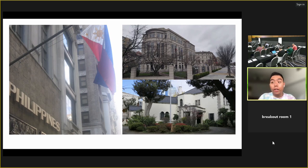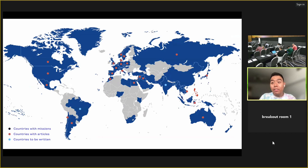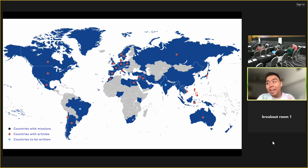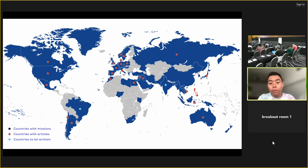Looking at the map, countries shown in blue have Philippine diplomatic missions — embassies, consulates, or both. In the case of Taiwan shown in light blue, it's the Manila Economic Office. Countries shown in red have Wikipedia articles relating to their embassy or consulate, and much of this work, outside of the original three articles, were articles that I had written starting in 2013.